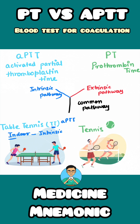You should also remember that lawn tennis is a game which is played outdoors, and that 'outdoor' should remind you of the extrinsic pathway. The single T in 'tennis' should remind you that PT, or Prothrombin Time, is the investigation which signifies disorder in the extrinsic pathway. If there is a problem in the common pathway, then both APTT and PT will be deranged.